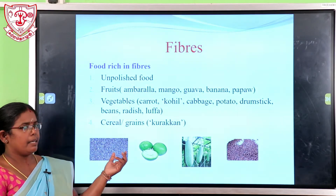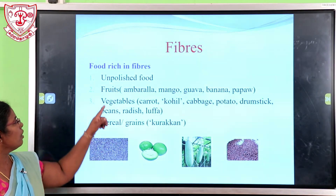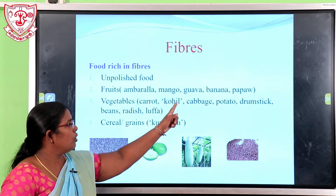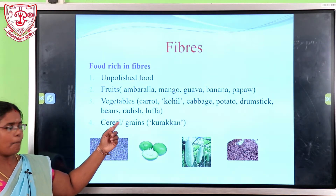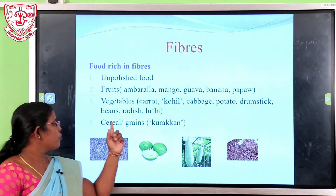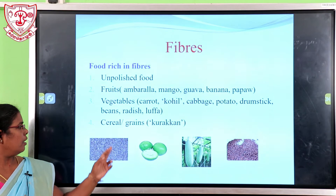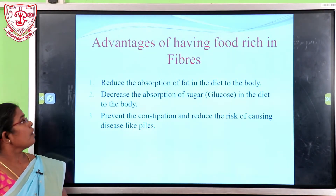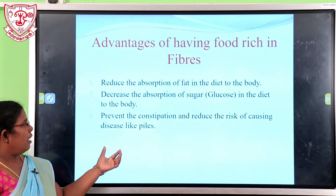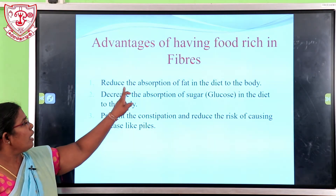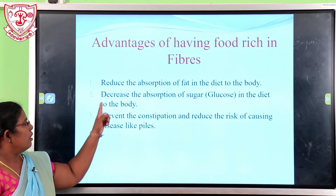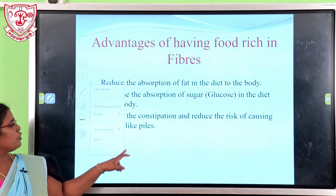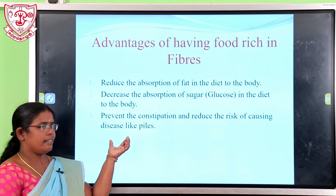Another nutrient is fiber. Foods enriched with fiber include unpolished food, fruits such as ambarella, mango, guava, banana, and pepper. Vegetables such as carrot, courgette, cabbage, potato, drumstick, beans, radish, and loofah. Grains such as kurakkan also contain fiber. Fiber helps to reduce the absorption of fat in the diet to the body, decreases the absorption of glucose, and prevents constipation and the risk of causing diseases like piles.